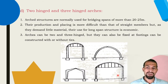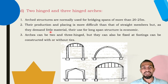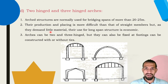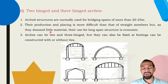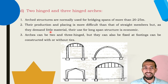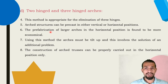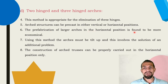Method 4: two-hinged and three-hinged arches. Arch structures are normally used for bridging spans of more than 20 to 25 meters. Production and placing is more difficult than for straight members, but as they demand little material, their use for long-span structures is economical. Arches can be two-hinged or three-hinged, fixed at footings, and constructed with or without ties. This method is appropriate for elimination of three hinges, and arch structures can be precast in either vertical or horizontal position.